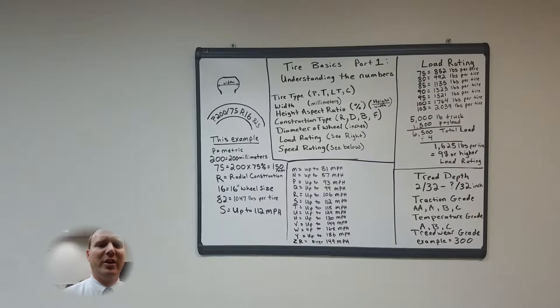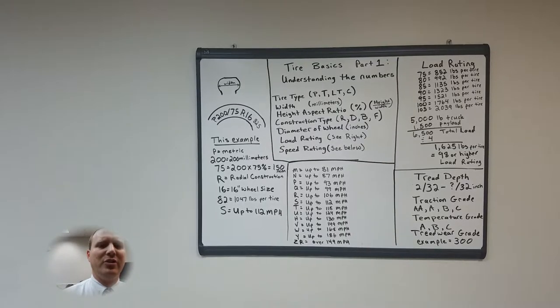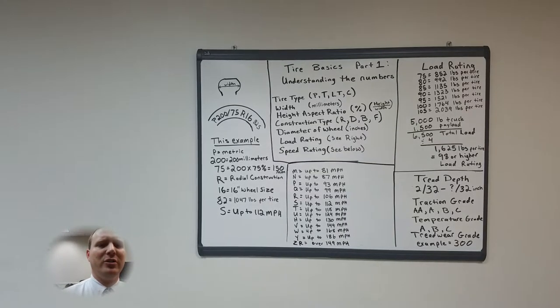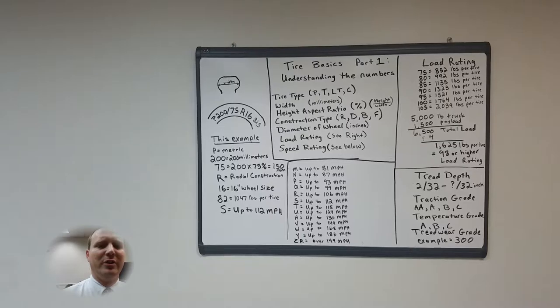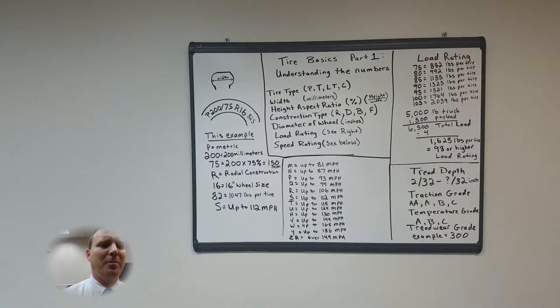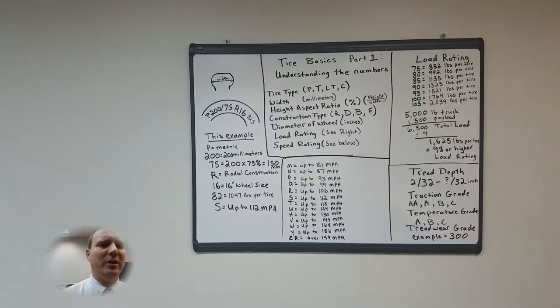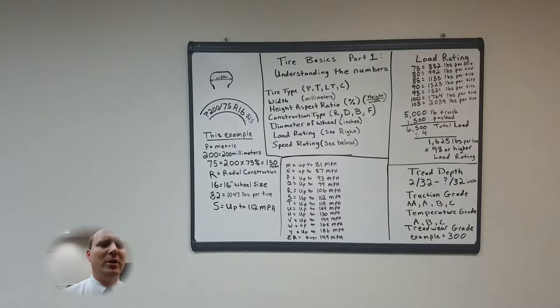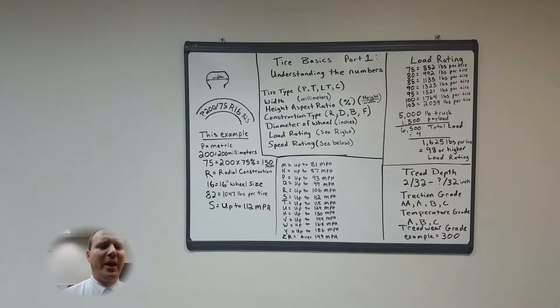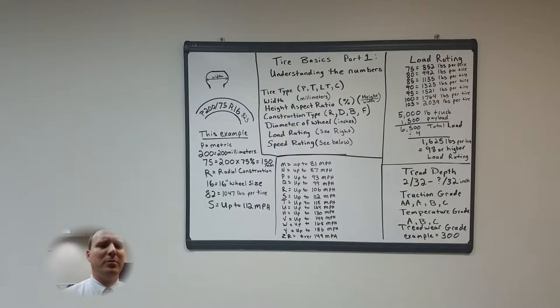On the left of the board is a tire example size. On the top center are some of the definitions and ratings. The bottom center is your speed rating chart. Top right are some example load ratings with a calculation of how to figure out your minimum load rating and some basic definitions on the bottom right.